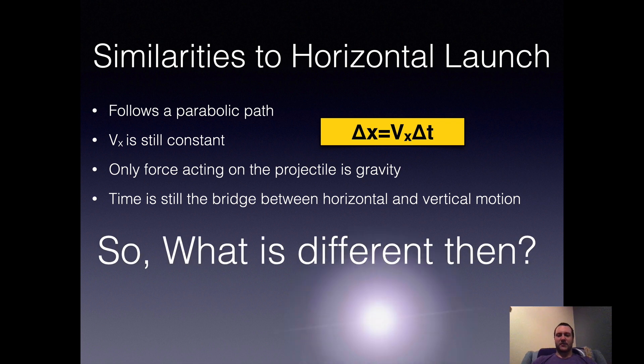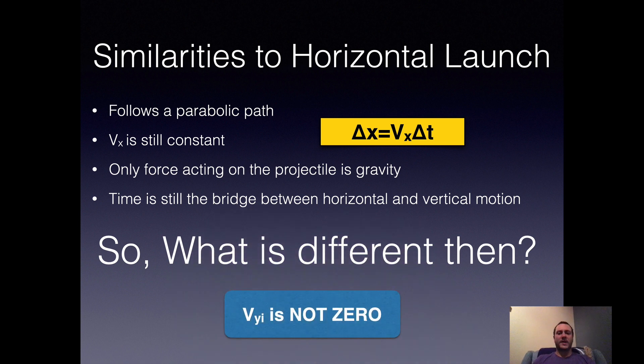So what is the difference? What is so different about it? VYI is no longer zero. That's it. Otherwise, what happened in a horizontal launch happens in an angled launch, other than VYI is not zero because that angle is moving upward. So we're now getting some upward motion as well as lateral motion when we launch this projectile. The max height cannot be at the launch point now; the max height is going to be some other distance down the launch.